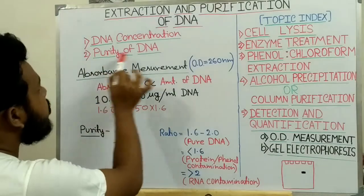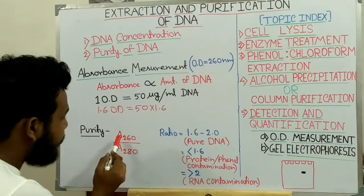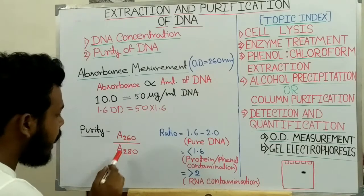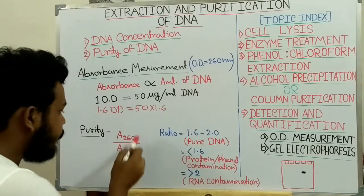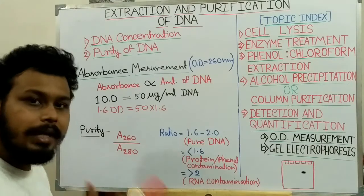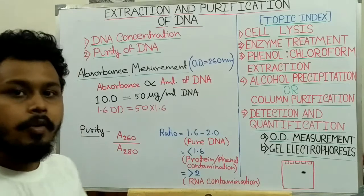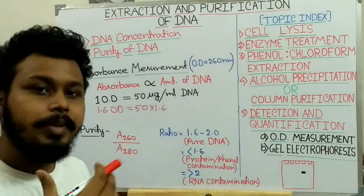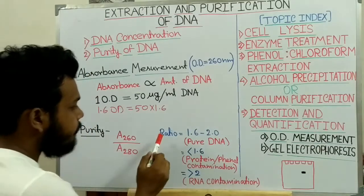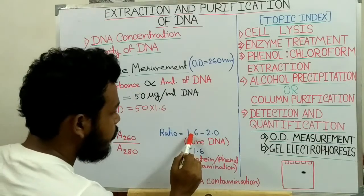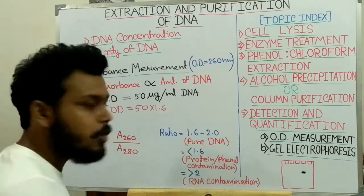Now, we have to check the purity of the DNA. This is done by measuring the absorbance at 260 nanometer and the absorbance at 280 nanometer, and from this ratio we can check the purity of the DNA — that is, whether it is contaminated with RNA or protein or not. If the ratio is between 1.6 and 2, then we can say that the DNA is pure.